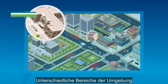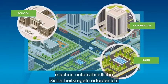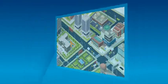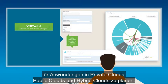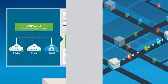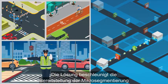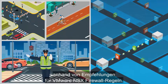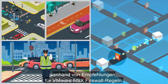Different areas of the environment require different rules for security. vRealize Network Insight enables you to plan security for applications across private, public and hybrid clouds. It helps accelerate micro-segmentation deployment by providing recommendations for VMware NSX firewall rules.